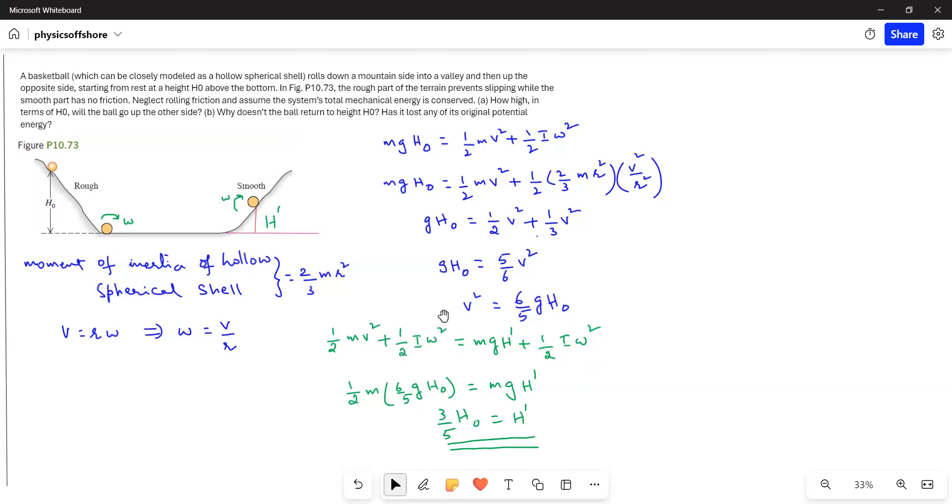Now the rotational kinetic energy goes off and then the remaining translational kinetic energy is equal to the gravitational potential energy. Now on substituting V², we get H' equals 3/5 H0. This is the answer for question A: how high in terms of H0 will the ball go up the other side?